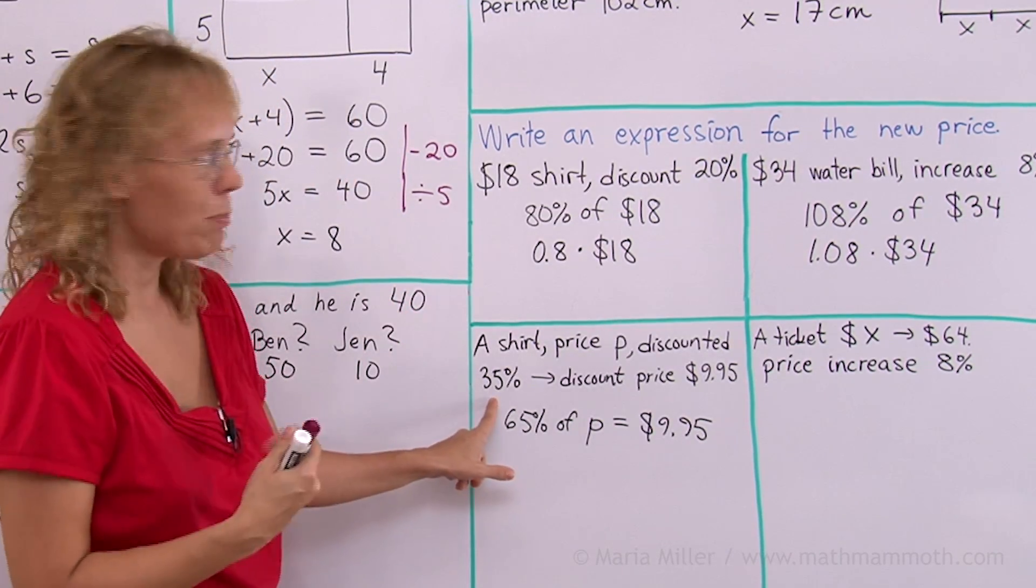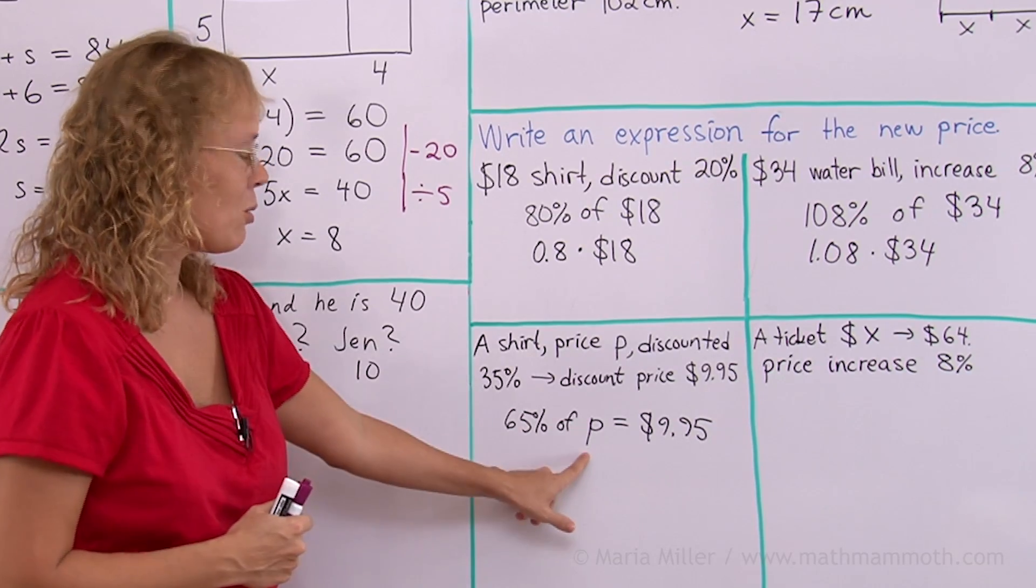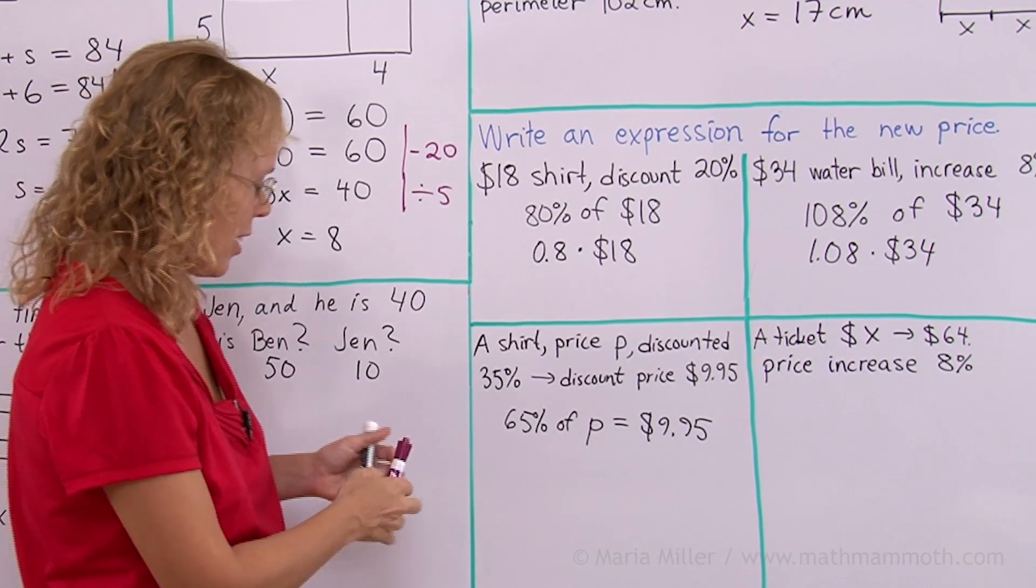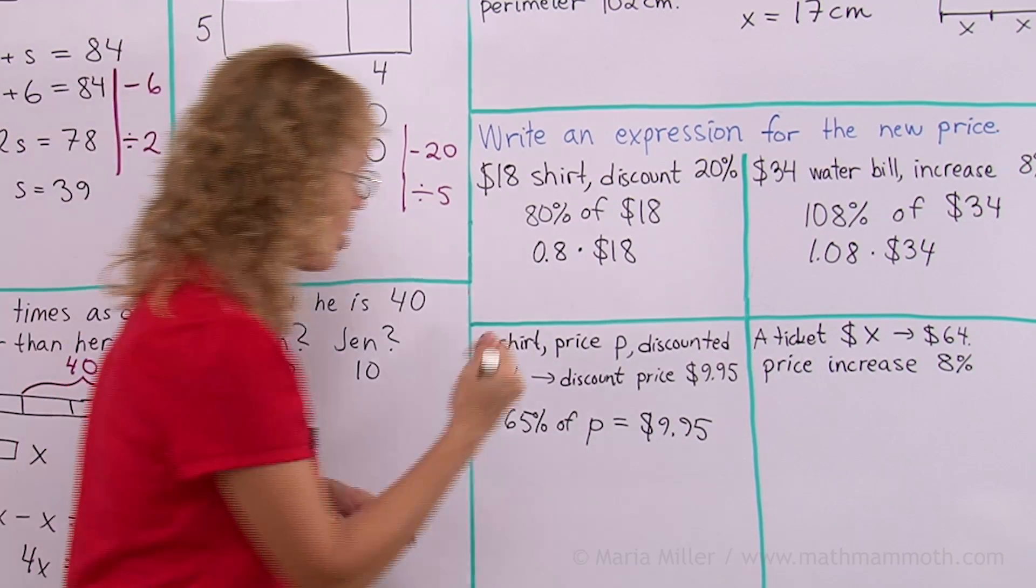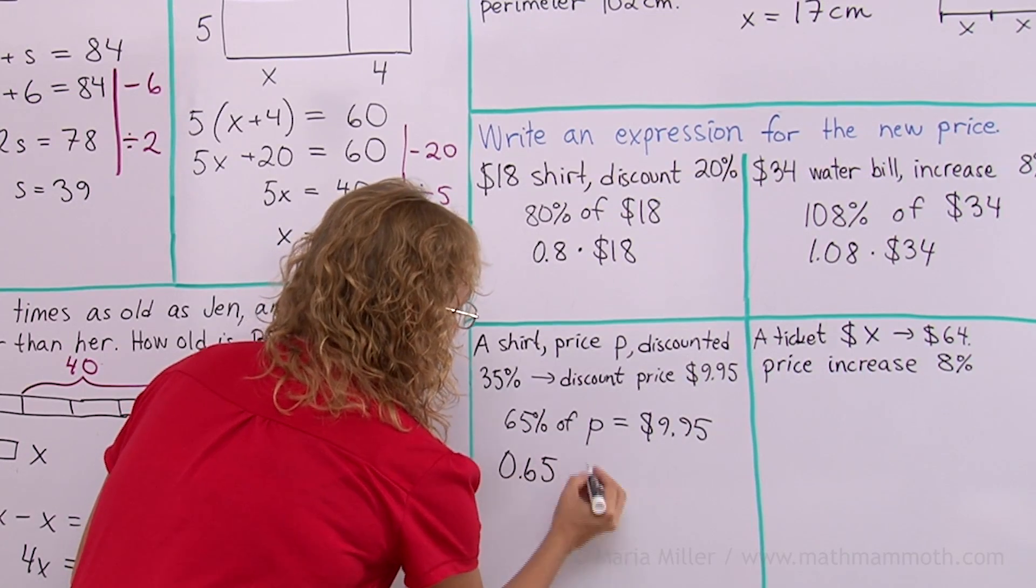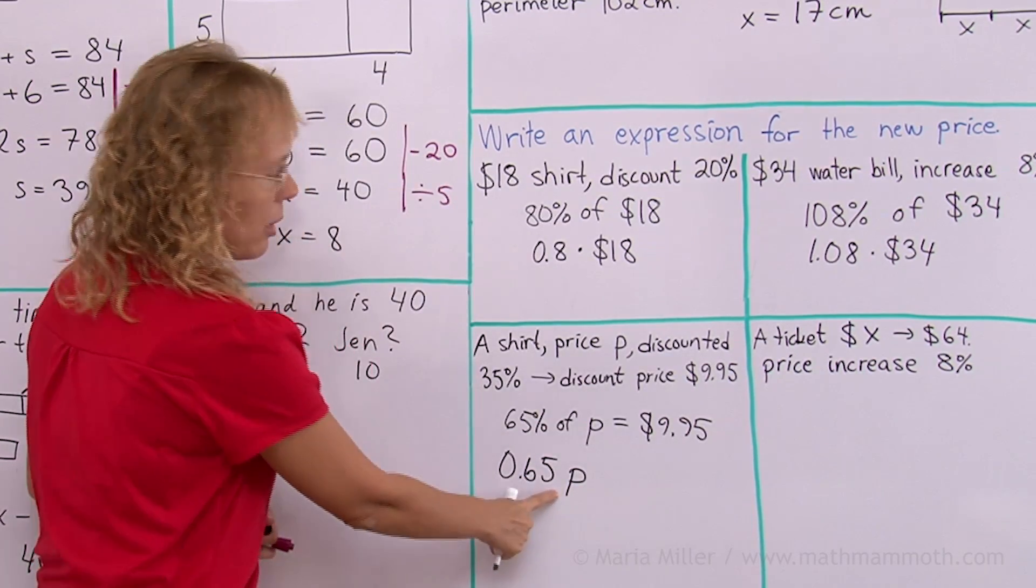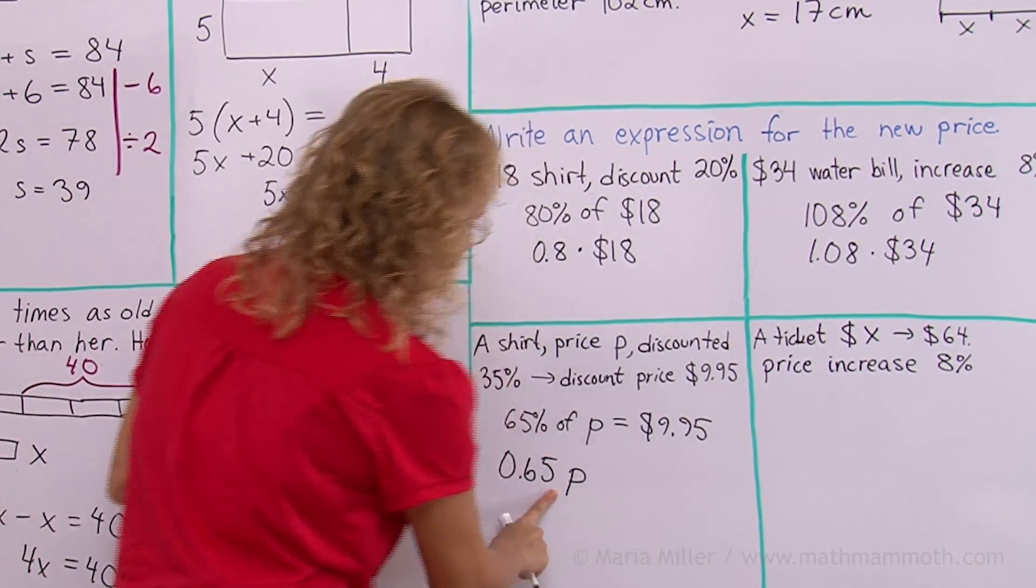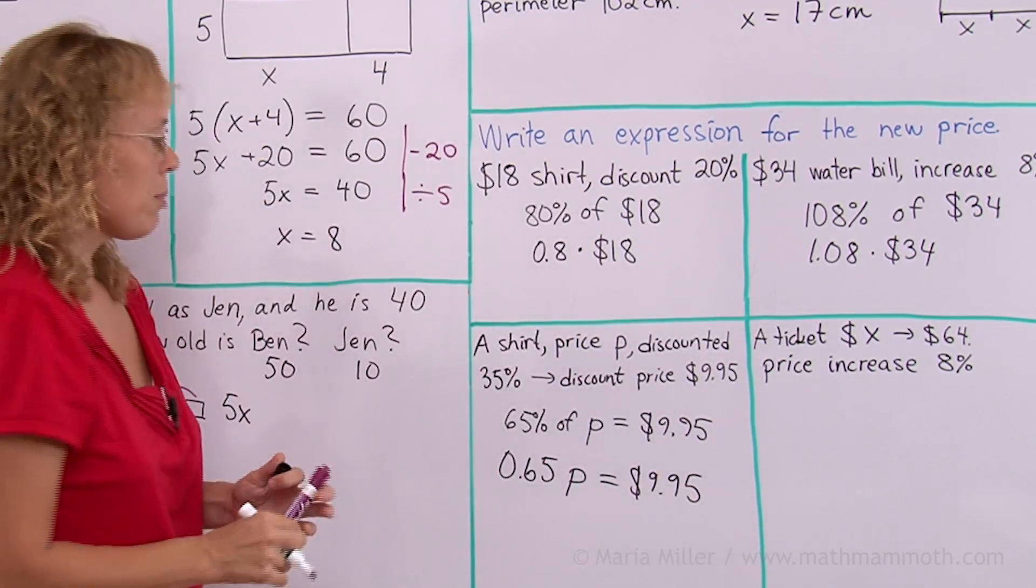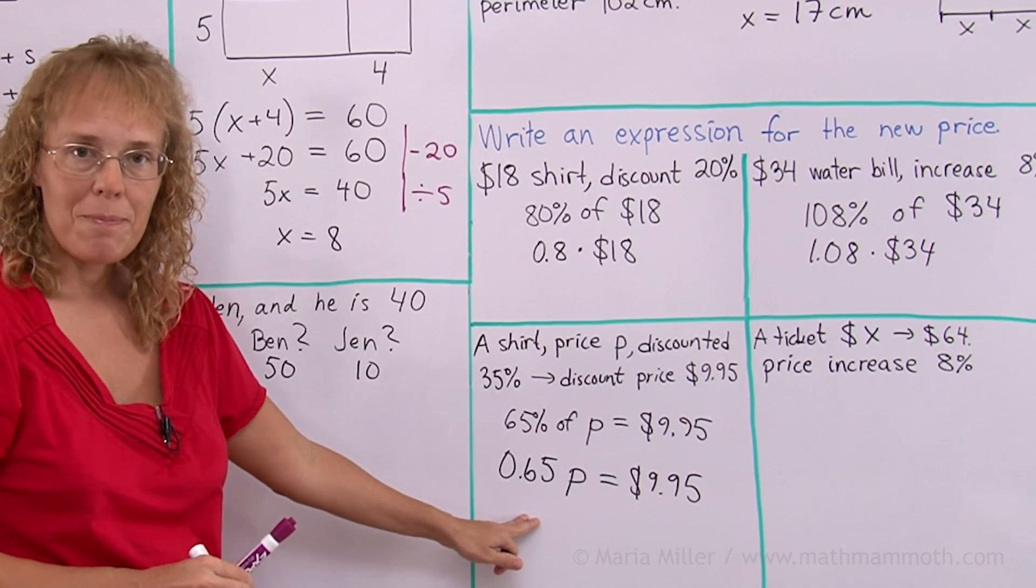Because the discount is 35%. And we don't know the original price. Or you are the merchant. You want to set it. And now of translates into multiplication. And this we write as a decimal. 0.65 and P. I don't need to write the multiplication symbol here. And then this is $9.95.